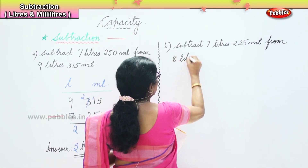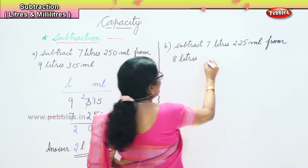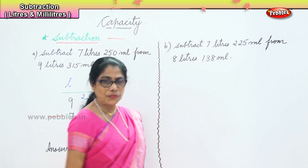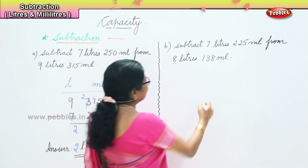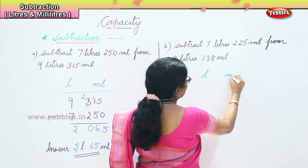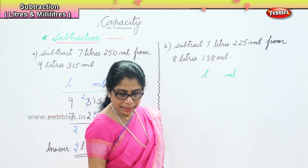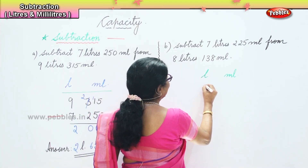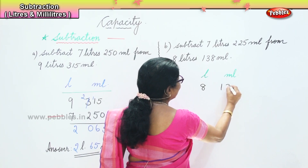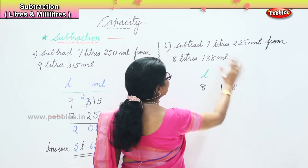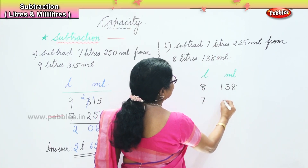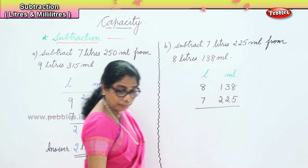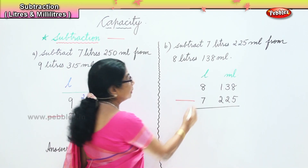...from 8 liters 138 milliliters. All we need to do first is put down liter, milliliter, then place the numbers correctly. You have to take away from, so put the big number first: 8 liters 138 milliliters, take away 7 liters 225 milliliters. Put the subtraction sign to remind ourselves.